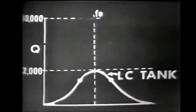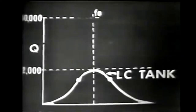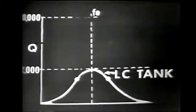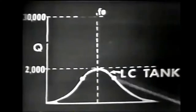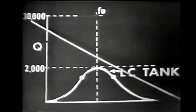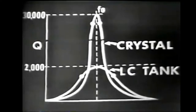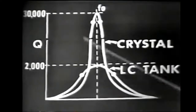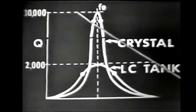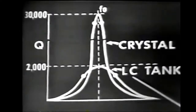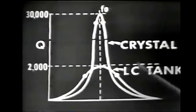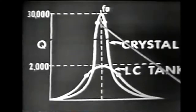The Q of the crystal circuit is many times greater than that of the LC circuit. The Q of an LC tank circuit is seldom greater than 2,000, whereas the Q of the crystal is sometimes as great as 30,000. Comparing these two, you can see the Q of the crystal is many times greater than that of the LC tank circuit. Because of the high Q, the crystal has better frequency stability.